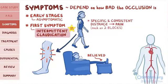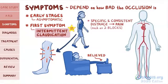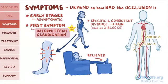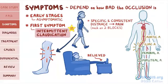The location of the pain can also help give a clue about which artery is occluded. For example, hip claudication indicates aortic or iliac artery occlusion, whereas calf claudication points toward femoral or popliteal artery occlusion.